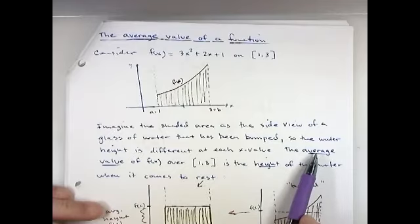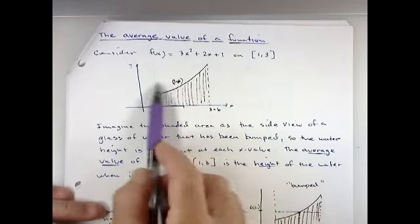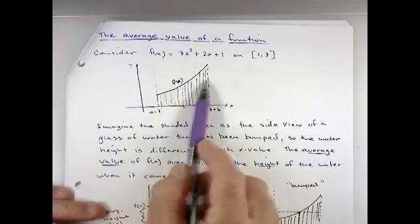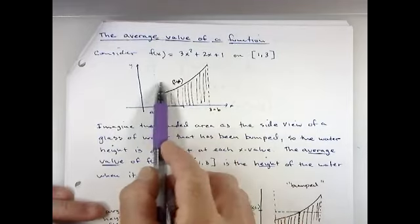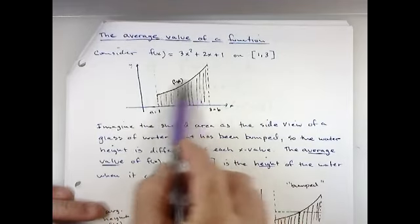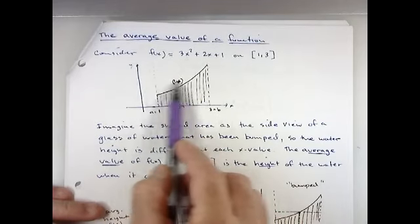What is the average value? Well when the water comes to rest, you could picture the water coming to rest at a certain height here. Whatever that height is would be your average value. So the average value is a Y value. It would be the average height.